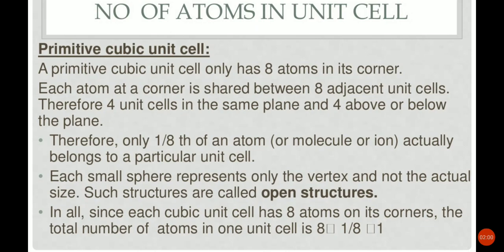Particles are represented by small spheres showing the vertex position, not the actual size — such structures are called open structures. Since each unit cell has 8 atoms at its corners, and each corner contributes 1/8, the number of atoms in a primitive cubic unit cell is 8 × 1/8 = 1. So 1 is the number of atoms in a primitive unit cell.